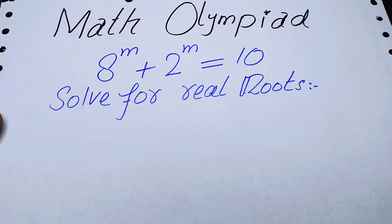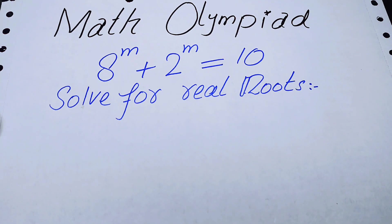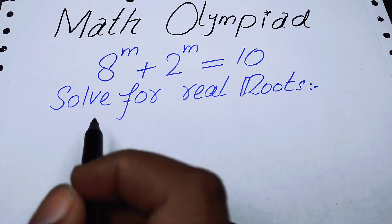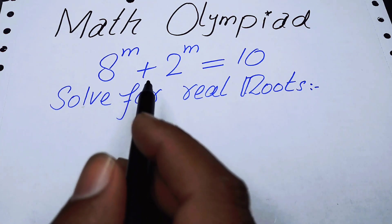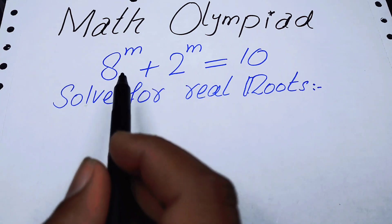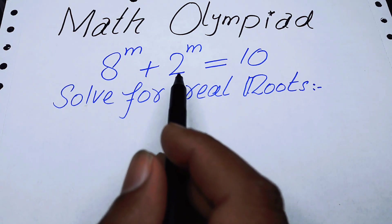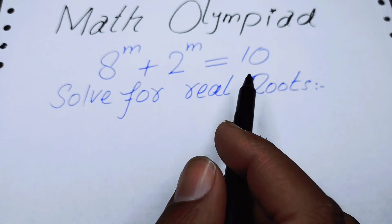Hello everyone, welcome back to the Map of Mathematics. In this video we are going to solve this nice algebra problem. The very first thing we are going to do is focus on the right hand side, where you can see 8 to the power of m plus 2 to the power of m is equal to 10.